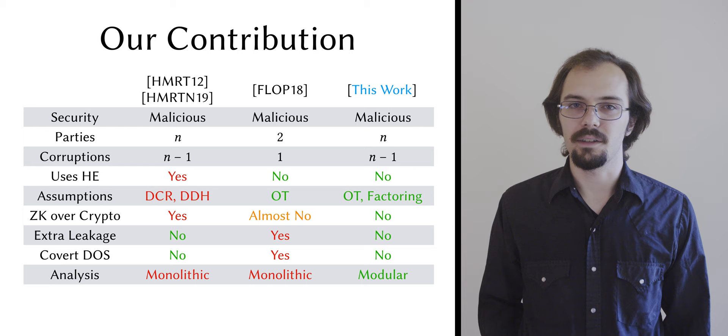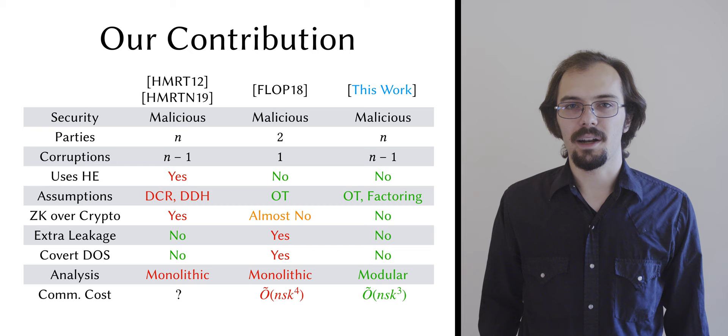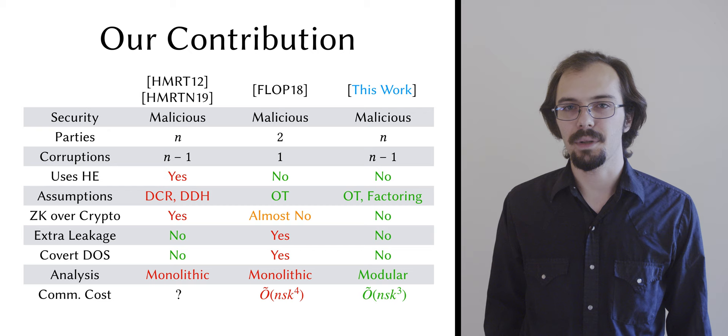Finally, our protocol improves asymptotically on the FLOP protocol by a factor of the security parameter in terms of communication cost. We don't have an asymptotic analysis of the HMRT protocol's communication cost, so I don't want to make a specific comparative complexity claim. But I will point out that we know HMRT to be much more expensive than FLOP concretely.